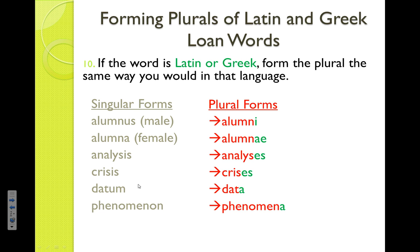Datum — you didn't know there was a singular form of data, but there is. The U-M ending is another dead giveaway that you're dealing with Latin and Greek, and that turns into just an A for the plural: data. By the same token, phenomenon with the N-O-N ending — we add an A at the end: phenomena. The only way to check yourself without a dictionary or spell check is to memorize these patterns. Do be careful: just because a word ends with U-M doesn't necessarily mean it's Latin or Greek.